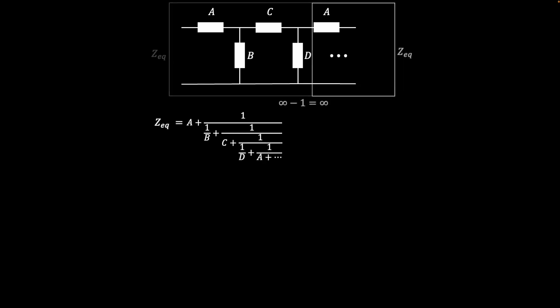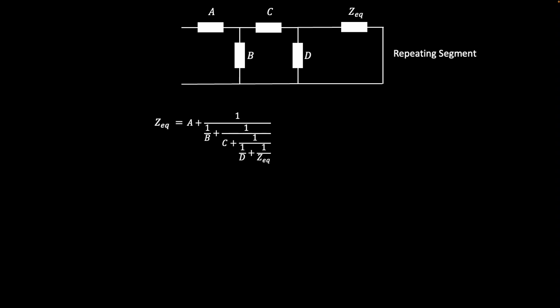More can be learned from a ladder network with four different segments that repeat infinite times. The continued fraction also extends an infinite number of levels. Since removing 1 from infinity is still infinity, the repeating segment can be considered the same as the total. The total impedance can then be inserted where the circuit starts to repeat and the continued fraction now has a finite number of terms. Starting at this point and for the rest of the video, it helps to pause and watch things slowly and carefully in order to keep track of what's going on.